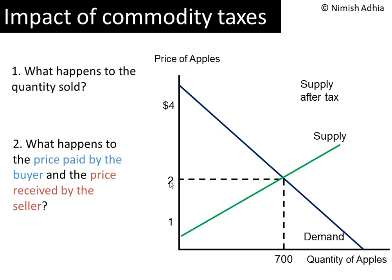Now suppose the government imposes a $1 tax on the suppliers — the sellers. Every time they sell an apple, they have to pay $1 to the government. How will that affect the supply curve? A tax can be thought of as an increase in cost of production, so the cost of producing an apple has gone up by $1 for apple producers. An increase in cost of production always decreases supply, or shifts the supply curve to the left.